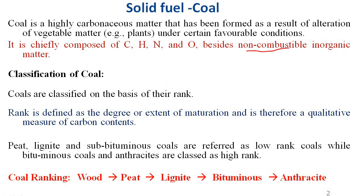The classification of coal is based on rank. Rank is the measure of carbon content. In the transformation process, the percentage of carbon increases, hardness increases, and moisture content decreases. Also, the percentage of hydrogen, oxygen, nitrogen, and sulfur decreases. Based on these parameters, let us see the classification or transformation of wood into the qualities of coal.